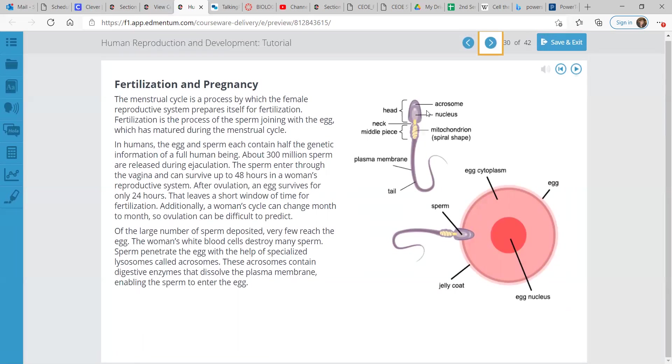Fertilization and pregnancy. The menstrual cycle is a process by which the female reproductive system prepares itself for fertilization. Fertilization is the process of the sperm joining with the egg, which has matured during the menstrual cycle. In humans, the egg and sperm each contain half the genetic information of a full human being. About 300 million sperm are released during ejaculation. The sperm enter through the vagina and can survive up to 48 hours in a woman's reproductive system. After ovulation, an egg survives for only 24 hours. That leaves a short window of time for fertilization. Additionally, a woman's cycle can change month to month, so ovulation can be difficult to predict.